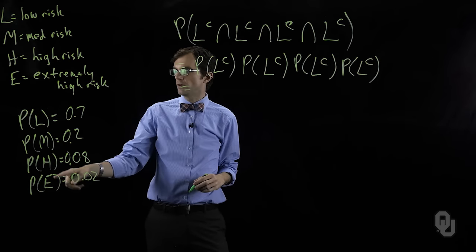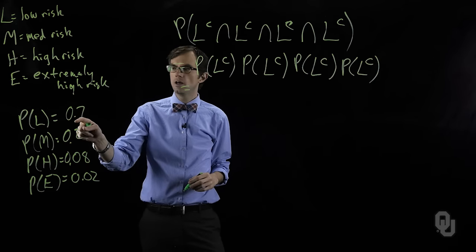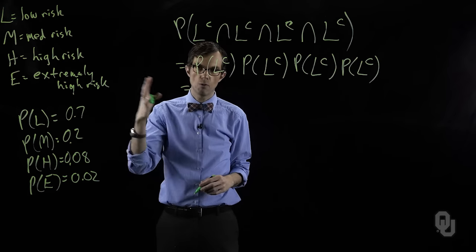Okay, we see that low risk is point seven, therefore the complement of low risk is point three.